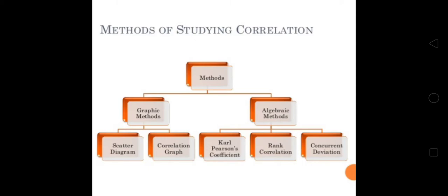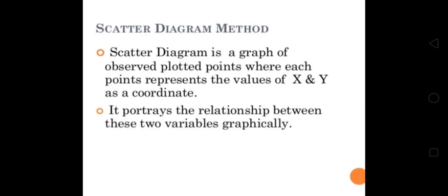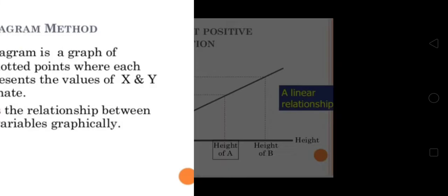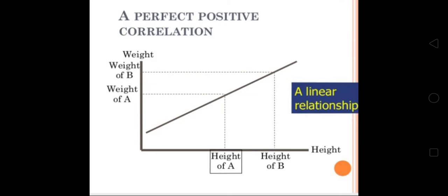Karl Pearson and rank correlation - co-current deviation we have not discussed. Scatter diagram is the first method. Scatter diagram is a graph of observed plotted points where each point represents the values of X and Y as a coordinate. It portrays the relationship between these two variables graphically.